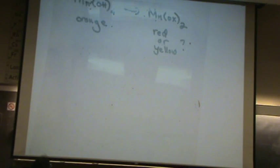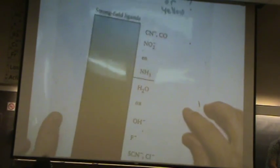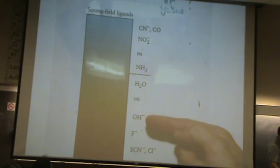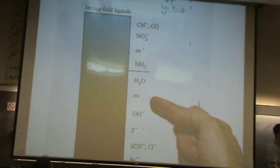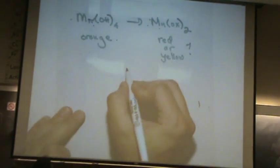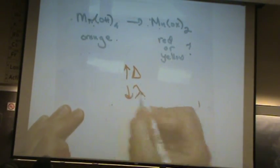So let's follow our order. First, let's start with delta — get your spectrochemical series out. Is delta going up or down? It's going from here to here, so it's going up. Delta goes up. What happens to lambda? Down. So now, once we have that, we go straight to our color wheel.